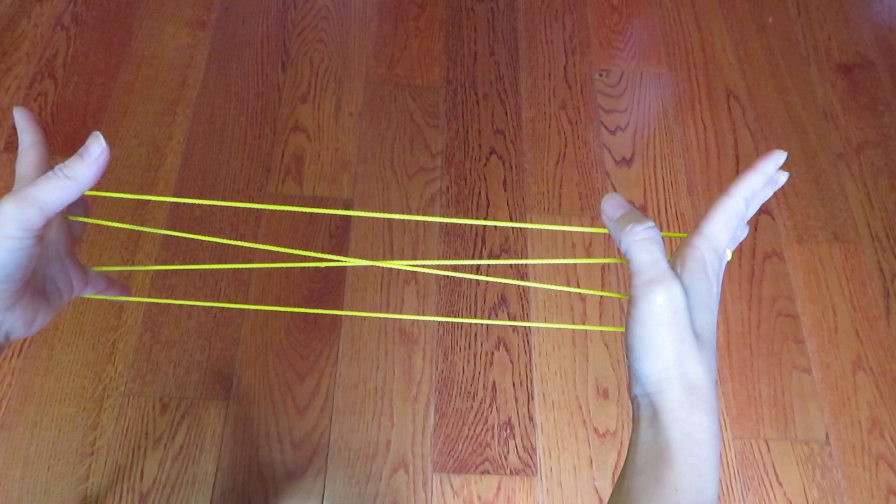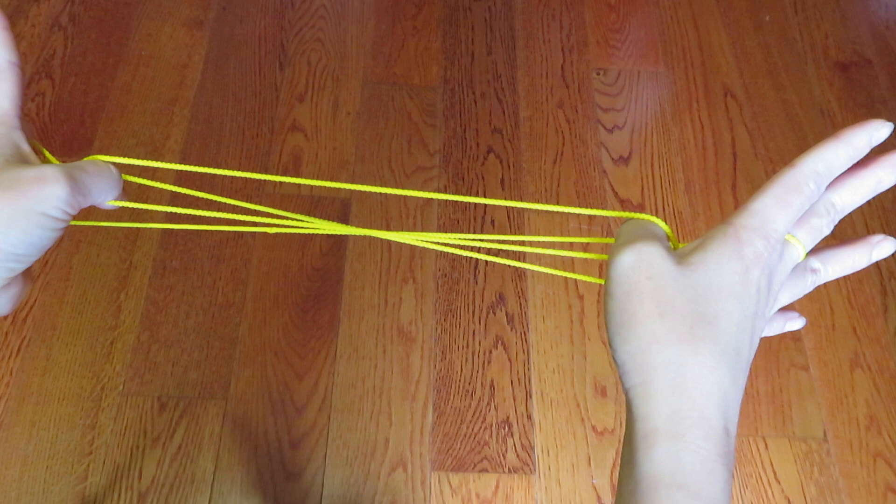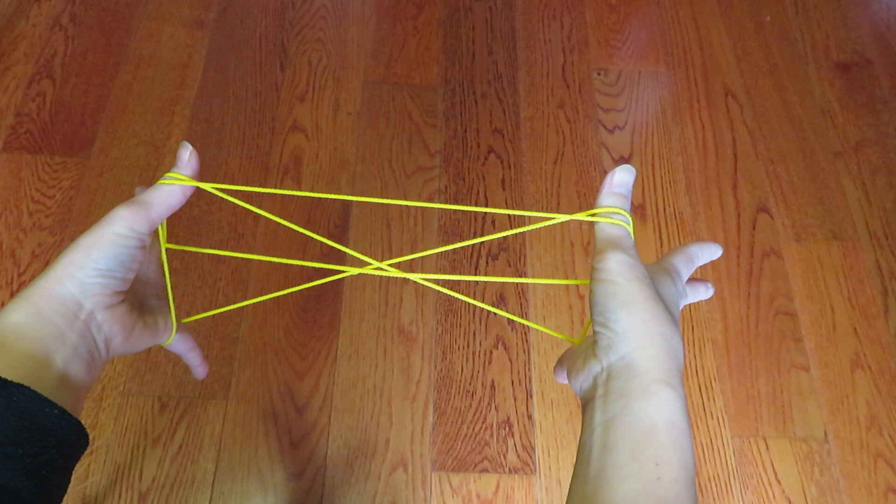Now, with thumb, pick this bottom one. Can you see? Pick this bottom one. Go over to the top one, and pick this third one like this. So, it looks like this. From the top, it looks like this.